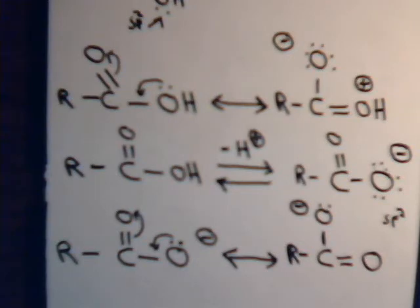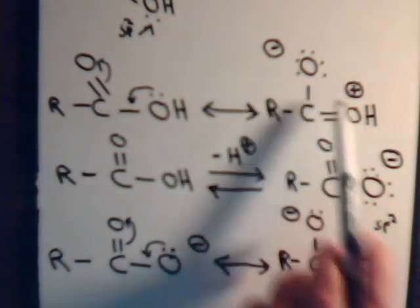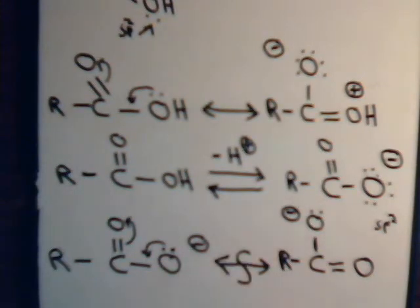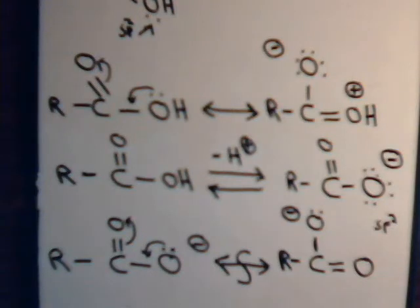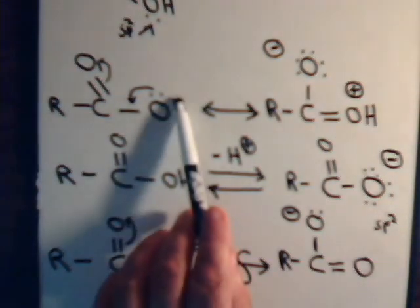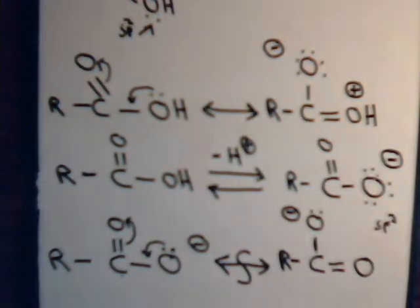So with the anion, notice what happens: there is no charge separation like we had with the original molecule. Instead, what we have is charge dispersion — the negative charge was here, now it's over here. Also notice that these two structures are symmetrical: double bond, single bond vs. single bond, double bond, as if we just rotated about that bond. These are symmetrical structures. So the anion has a much better resonance-stabilized system compared to the acid itself. Therefore, this is highly motivated to get rid of that proton, to form the anion, and form this much better resonance-stabilized system.